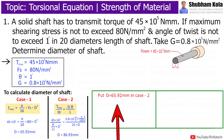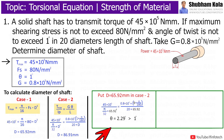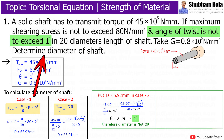To check the calculated diameter values, I will put the diameter value 65.92 mm into the second case. Then I got the angle of twist theta as 2.89 degrees, which is greater than 1 degree. Therefore, this diameter value does not satisfy the given condition, because as per the given data, the angle of twist is not to exceed 1 degree.